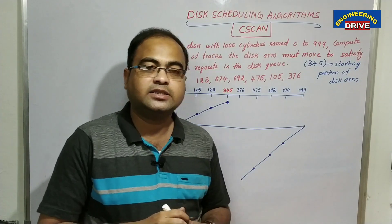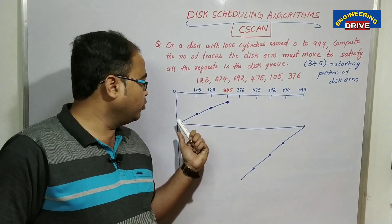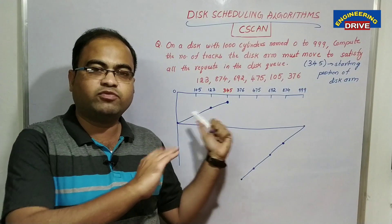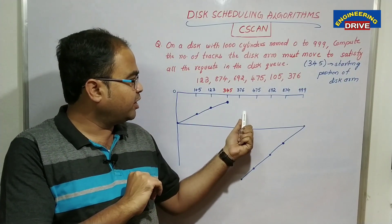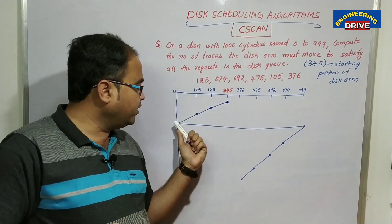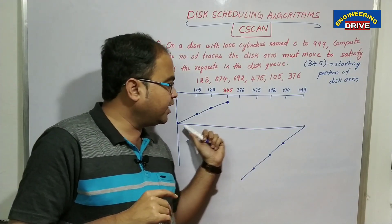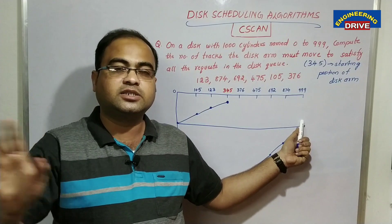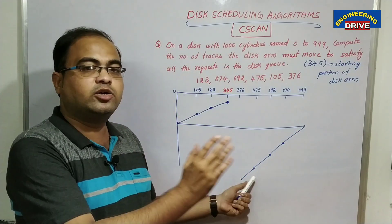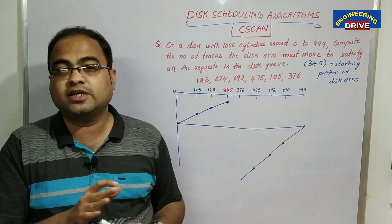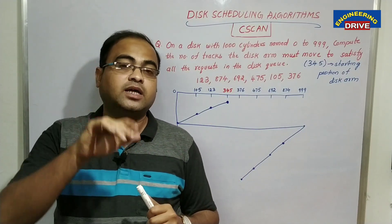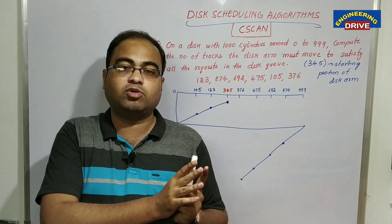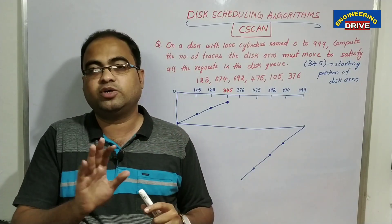The main difference between scan and circular scan is: in scan disk scheduling algorithm, once we move to the 0th cylinder, from the 0th cylinder we service all the remaining cylinders from left to right. But in circular scan, after moving to cylinder 0, control directly goes to the last cylinder — cylinder 999 — and from there it services the remaining cylinders right to left. If you have not watched the scan disk scheduling algorithm video, watch that first, then come to this one so you can understand very clearly.